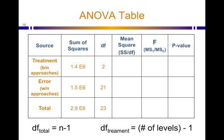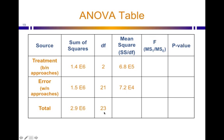The treatment degrees of freedom plus the error degrees of freedom need to add up. Moving one column over to mean square: the mean square is the sum of squares divided by the degrees of freedom — how much spread there is per degree of freedom, in a sense. We divide 1.4 times 10 to the 6 by 2, and 1.5 times 10 to the 6 by 21. We do not calculate mean square total.